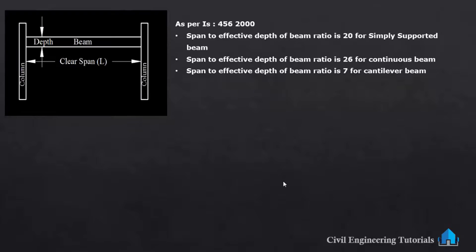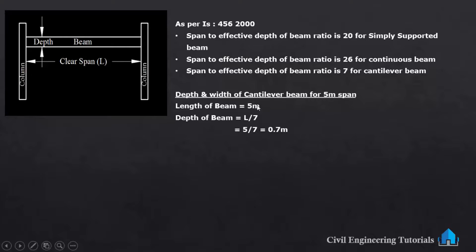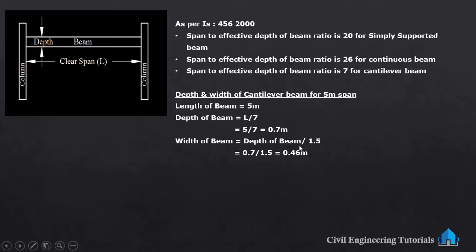Next, depth and width of cantilever beam for 5 meter span. Cantilever beam span to effective depth ratio is 7. Span is 5 meter, so depth of beam is L by 7, which is 5 divided by 7, giving 0.7 meter. Width of beam is depth divided by 1.5, so 0.7 divided by 1.5 gives 0.46 meter.